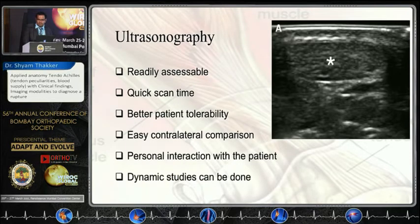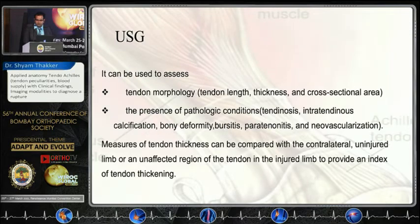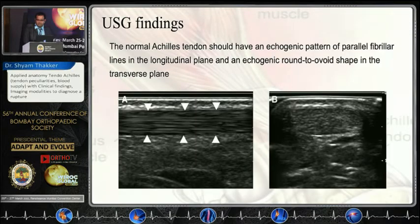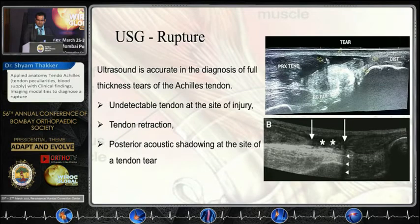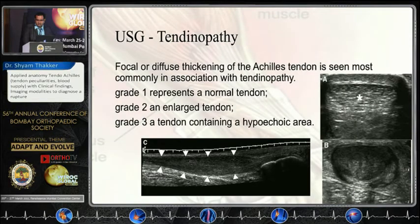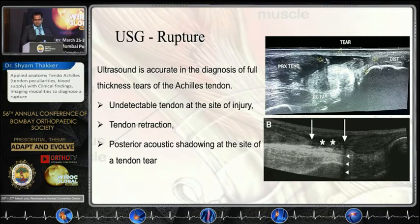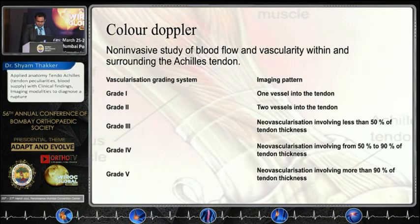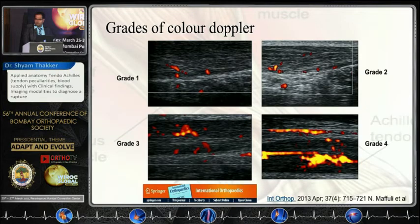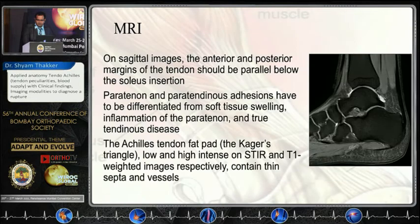USG is readily available, fast, and has better patient tolerability. We can see longitudinal and transverse sections. Fusiform swelling is seen in tendinosis; the transverse section shows the tendinotic appearance. A full-thickness Achilles tendon rupture shows proximal and distal ends with acoustic shadowing. Colour Doppler has some importance in revascularization and is good for checking healing results, though it is more of academic use.